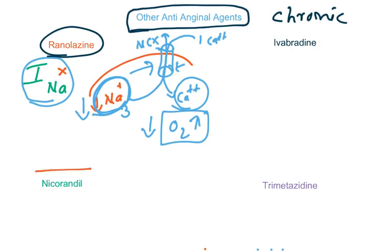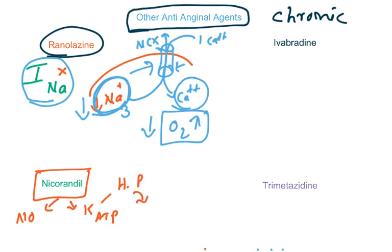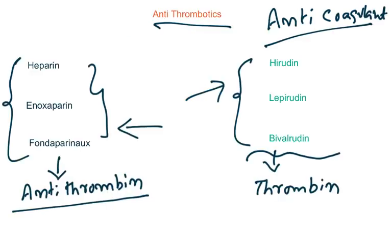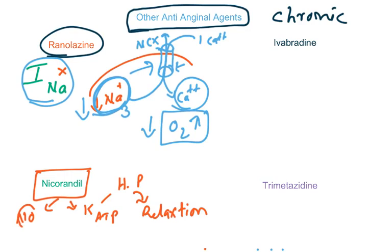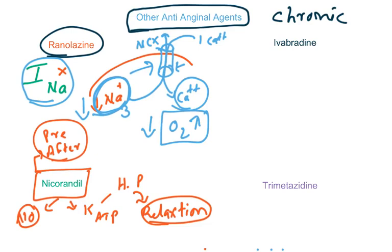The next drug is nicorandil. Nicorandil releases nitric oxide as well as activates potassium ATP channels, causing hyperpolarization and finally resulting in relaxation. The advantage with nicorandil is it reduces both preload and afterload.